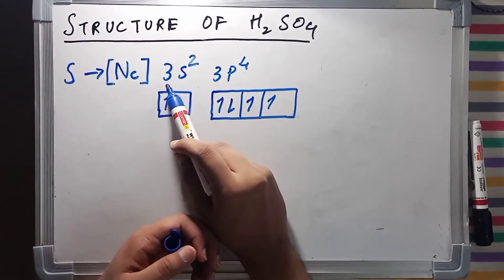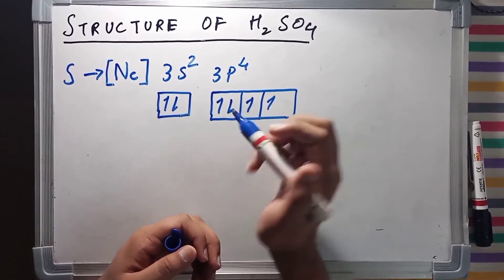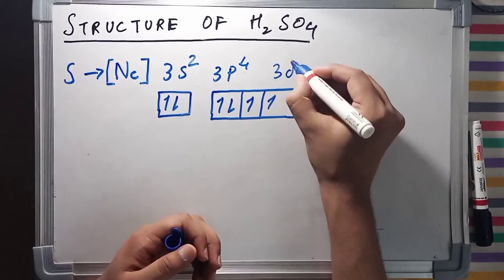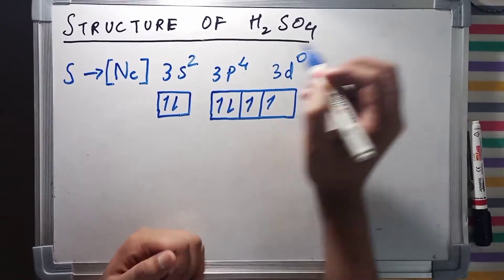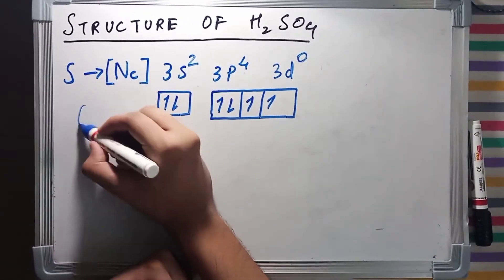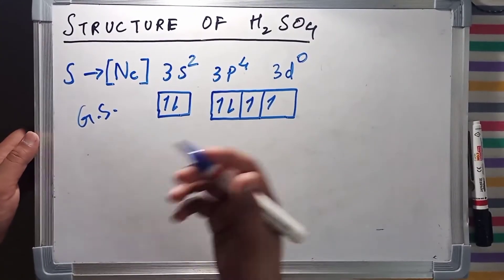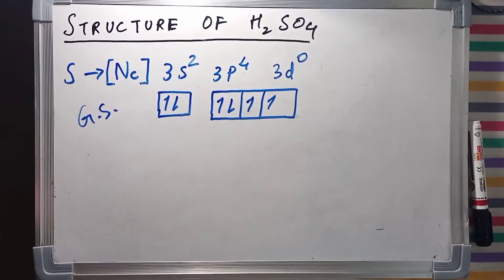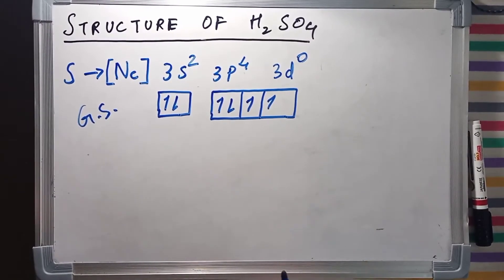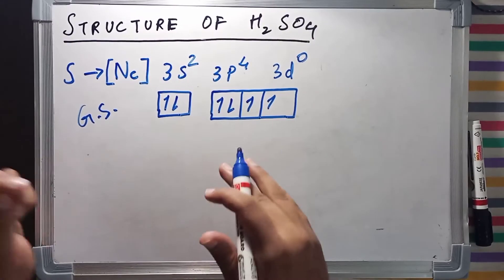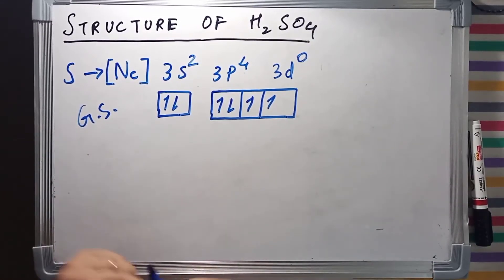As sulfur is a third period element, it also has a vacant 3D subshell, which has zero electrons in the ground state. What happens is that sulfur gains an excited state and shifting or jumping of electrons takes place.